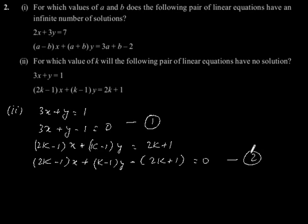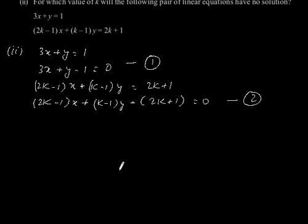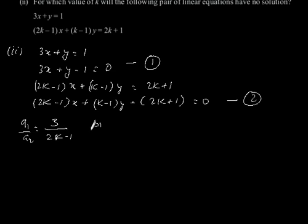So we get A1 by A2 is equal to 3 by (2k minus 1), B1 by B2 is equal to 1 by (k minus 1), and C1 by C2 is equal to 1 by (2k plus 1).